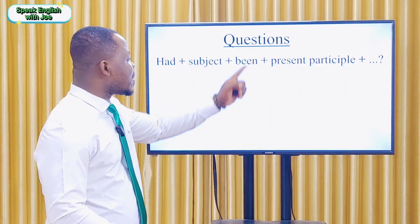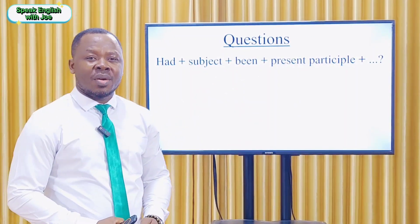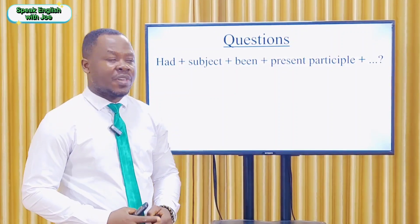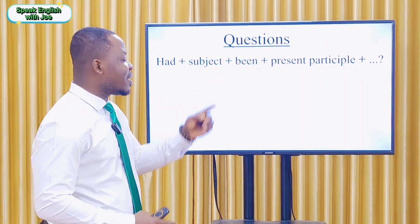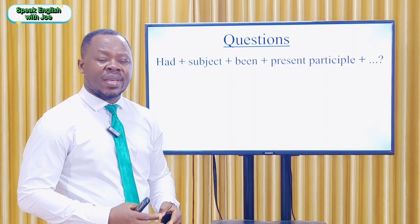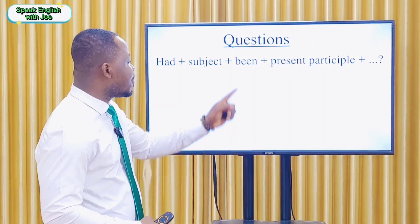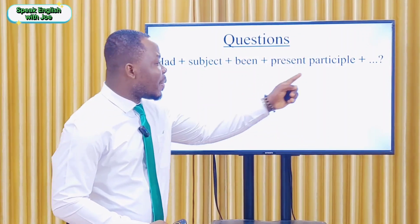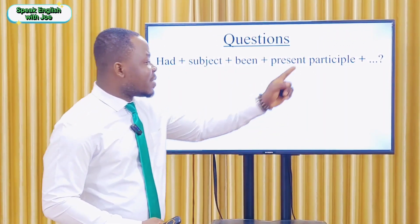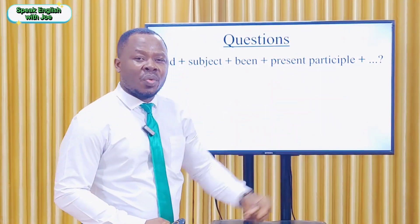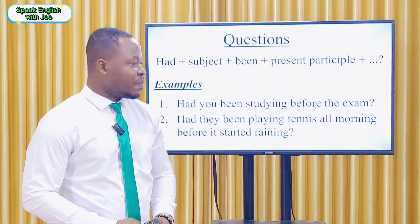To form questions with the past perfect continuous tense, we begin with the first helping verb 'had', plus the subject (I, you, we, they, he, she, it), plus the second helping verb 'been', plus the present participle (main verb plus -ing), plus the rest of the sentence, then the question mark.